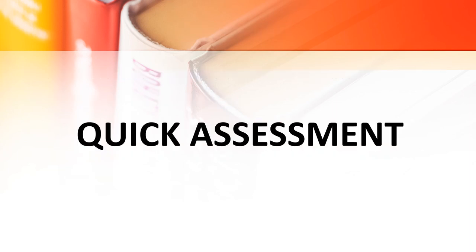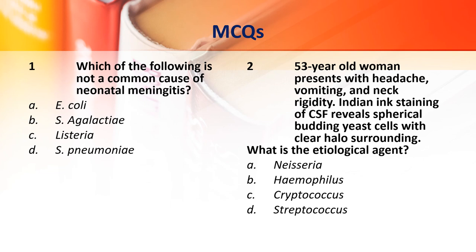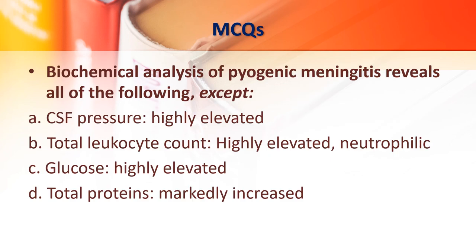For quick assessment MCQs: Which of the following is not a common cause of neonatal meningitis? A 53-year-old woman presents with headache, vomiting, neck rigidity; Indian ink staining of CSF reveals spherical budding yeast cells with a clear halo around them — what is the etiological agent? Biochemical analysis reveals all of the following except: CSF pressure highly elevated, total leukocyte count highly elevated, neutrophilic glucose highly elevated, or total protein markedly increased.